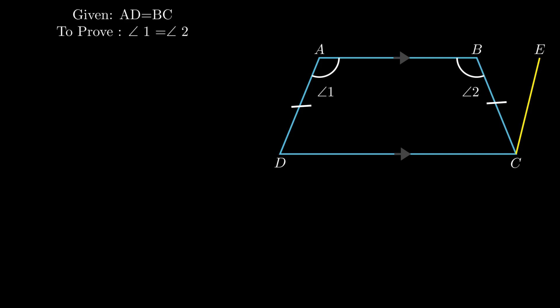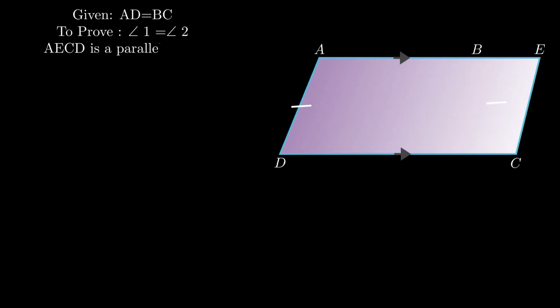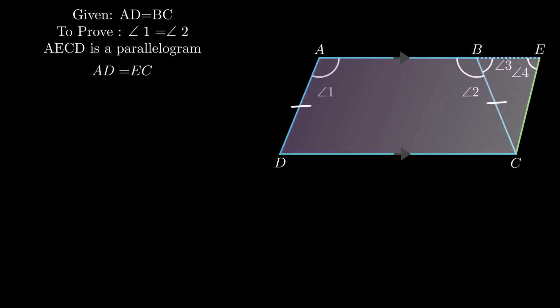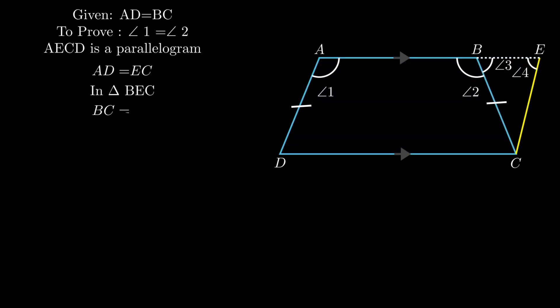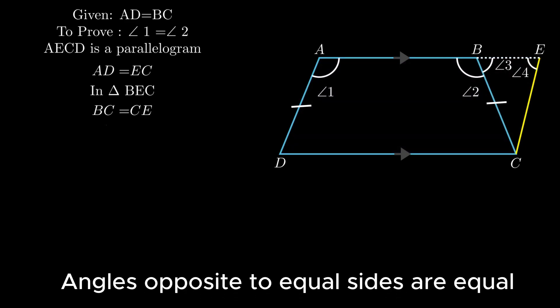In quadrilateral AECD, as from construction the opposite sides are parallel, therefore quadrilateral AECD is a parallelogram. As opposite sides of a parallelogram are equal, we conclude side AD equals side EC. Now in triangle BEC, side BC equals side CE. Therefore, by using the theorem angles opposite to equal sides are equal, that is, angle 3 equals angle 4.